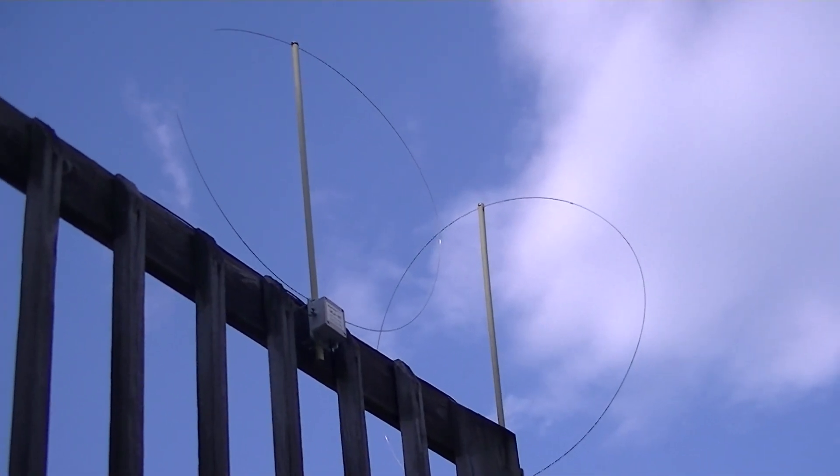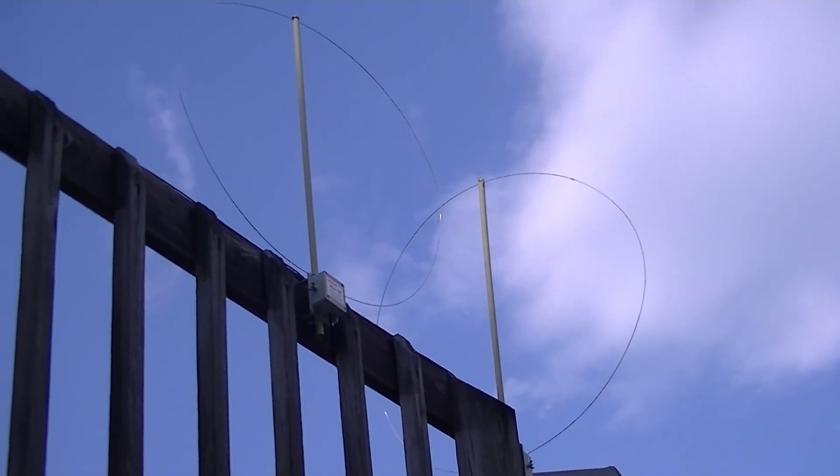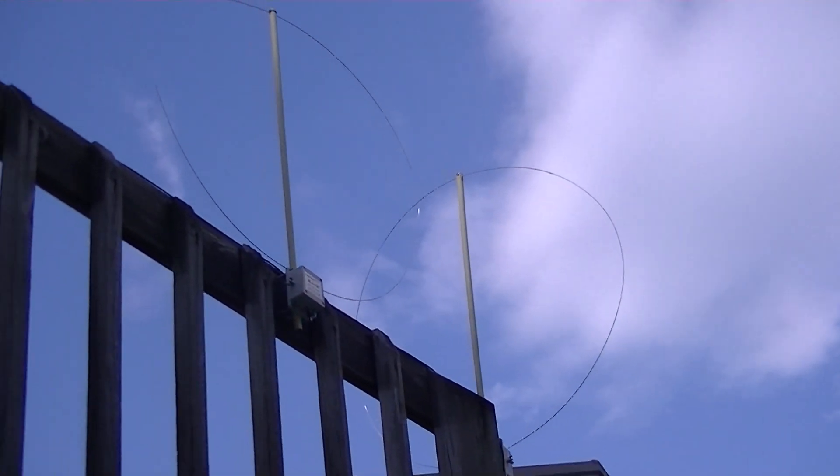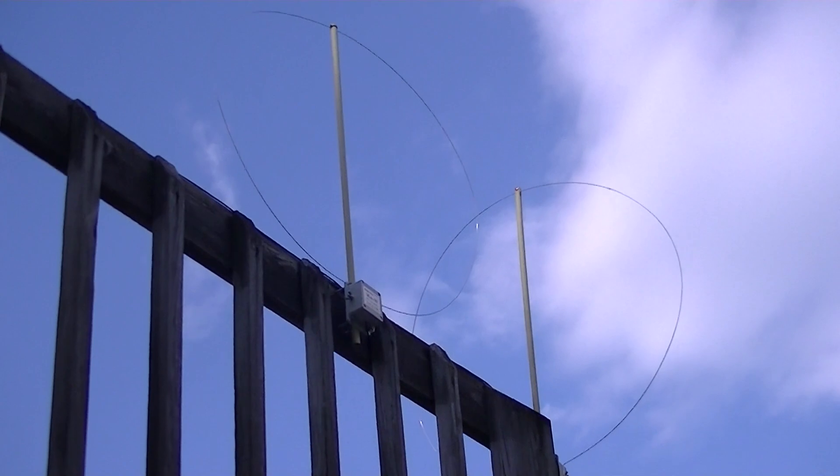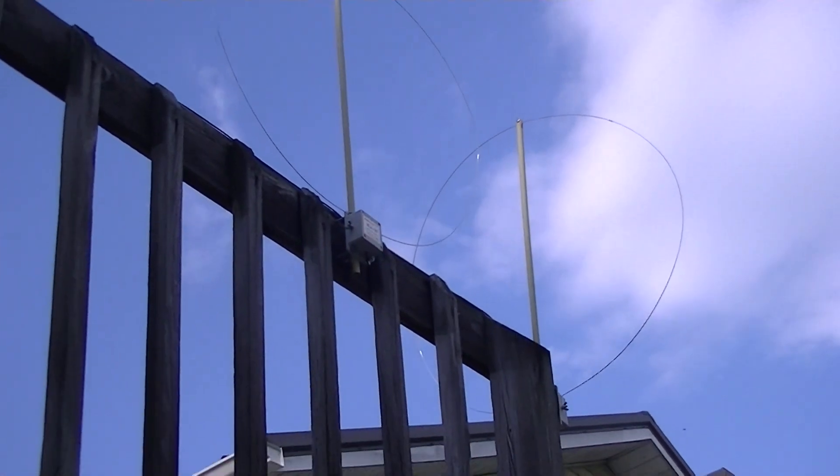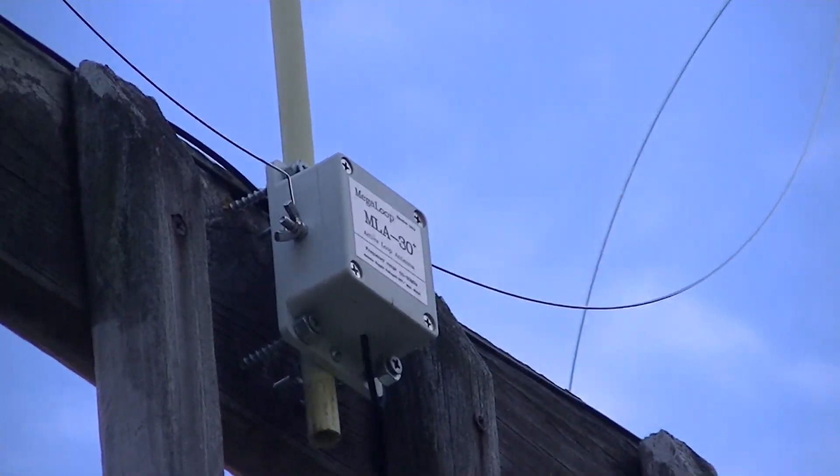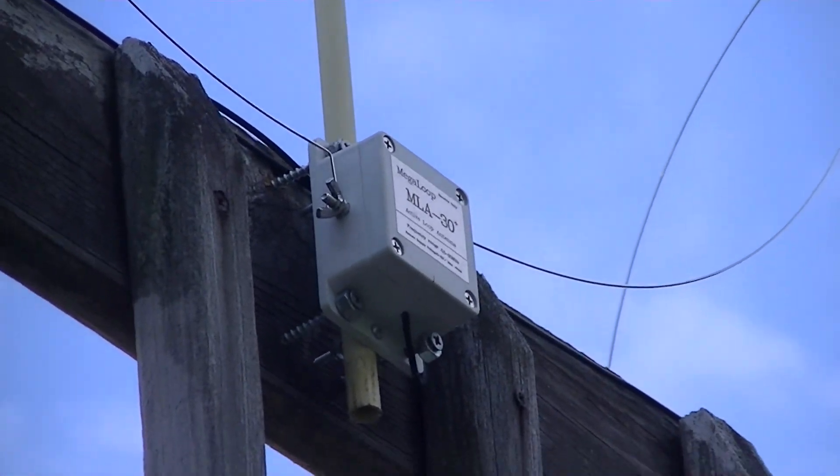These are two of the MLA30 Plus antennas. You can barely make out the wire loops. At the base of each loop is a white box. The wires are connected to the side of the box.